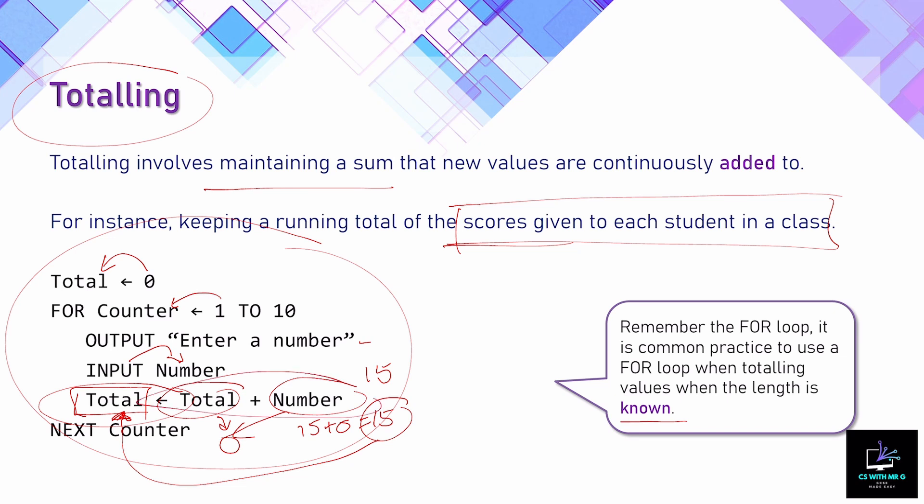This is a crucial step when totalling: not just adding the numbers together, but storing the result in the variable assigned for the total. Each time the algorithm loops, we enter a new number and keep adding it to the total. It stops once counter reaches 10, and we will have input 10 numbers and kept a running total along the way. This is our first standard method of keeping a total in an algorithm.